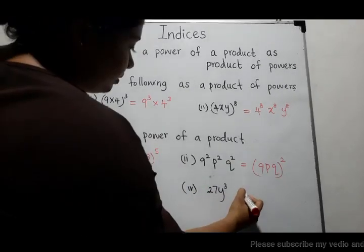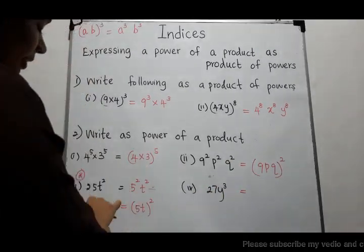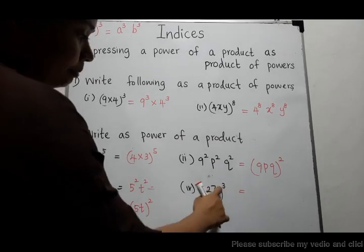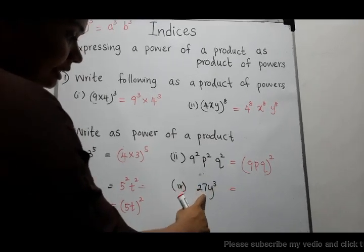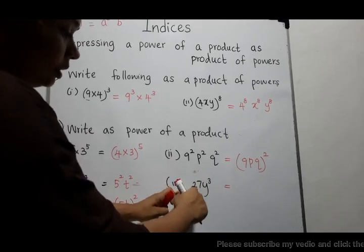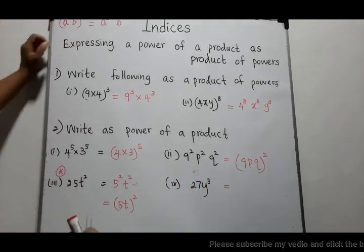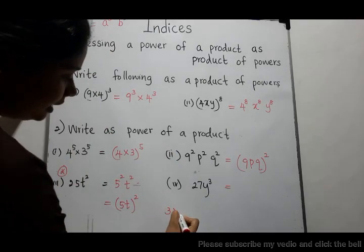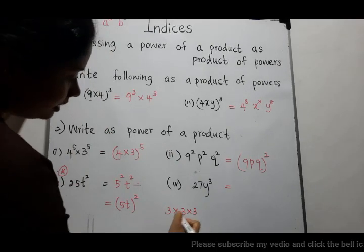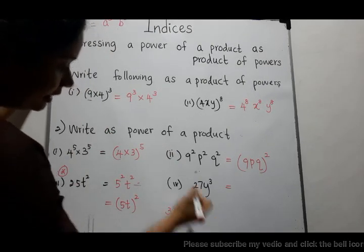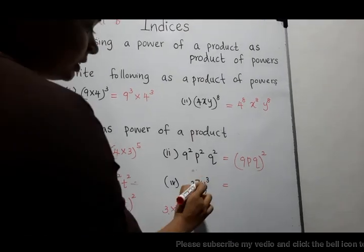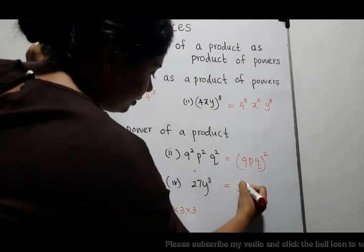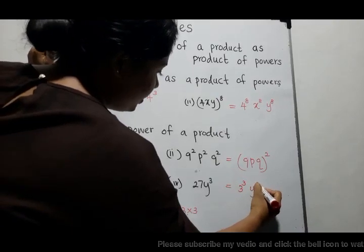Similarly, for 27y³, we need to write 27 with index 3. Since 27 = 3³, we can write 3³ · y³, which gives us (3y) to the power 3.